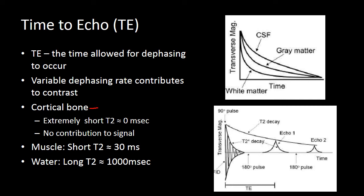Cortical bone dephases almost instantly, and because of that, no matter how short our TE is, cortical bone almost always looks dark. Muscle dephases more rapidly than water, so if we have a long TE, there will be more chance for the muscle to become dark while water remains bright. If you think about MRCP images — very long TR, very long TE — water is the only thing that hasn't dephased, and so fluid-filled structures are bright.